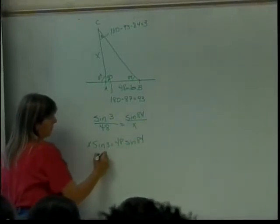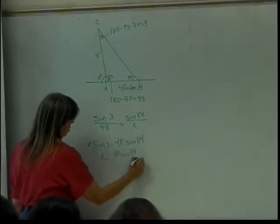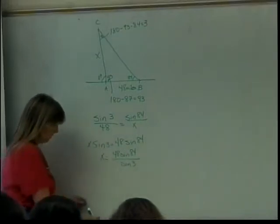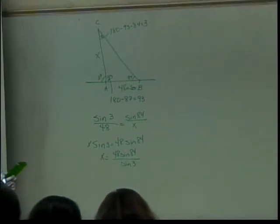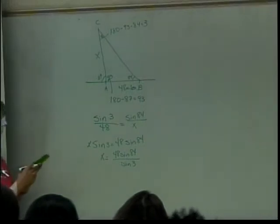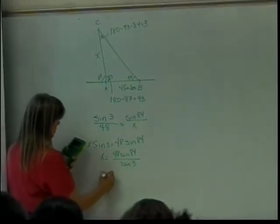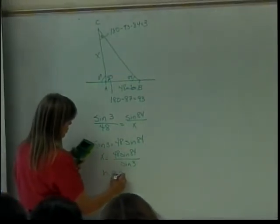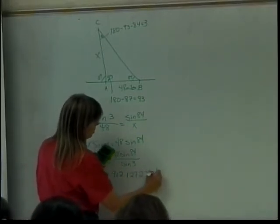Cross multiply: x times the sine of 3 equals 48 times the sine of 84. Then divide both sides by the sine of 3, so x equals 48 times sine of 84 over the sine of 3. These were all given in degrees, so x is approximately 912.1272334 miles.